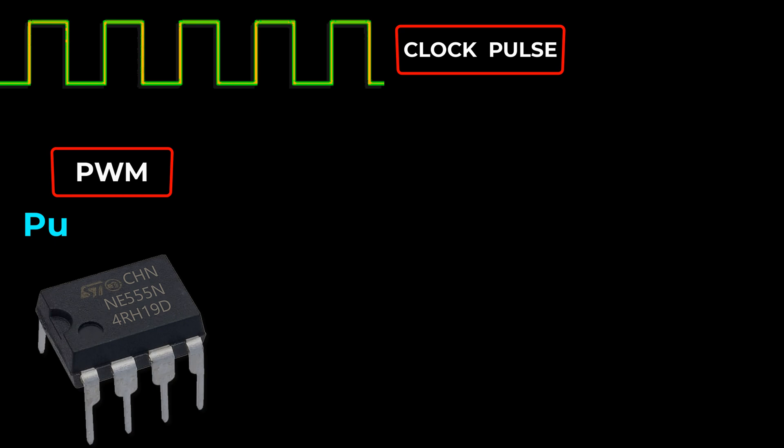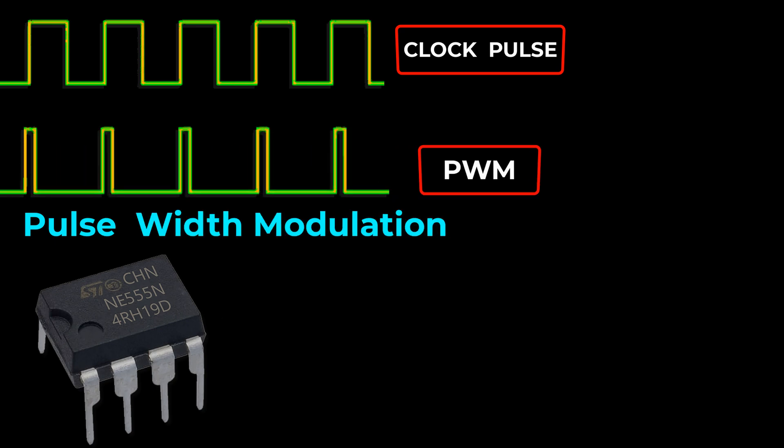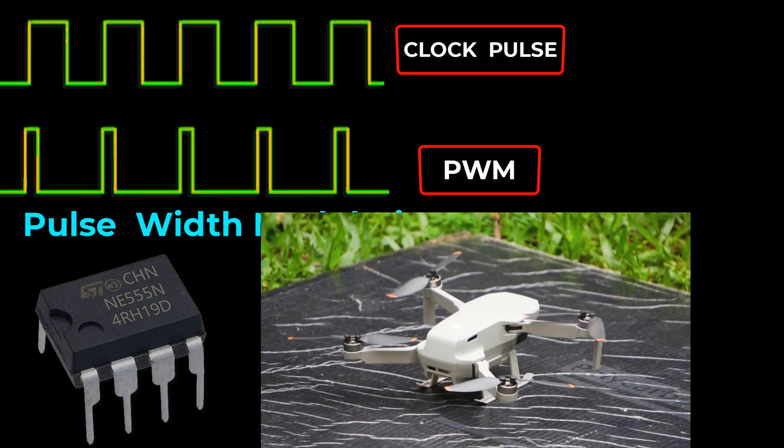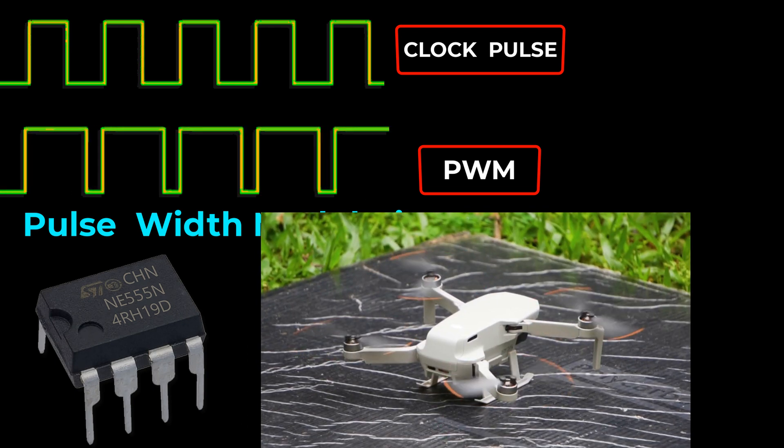Moreover, PWM signals can be generated by the characteristic of 555 IC for motor speed control and SMPS circuit.